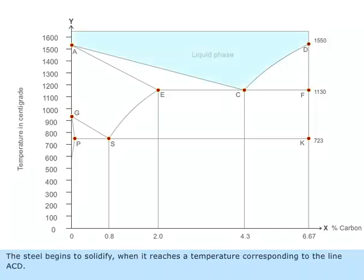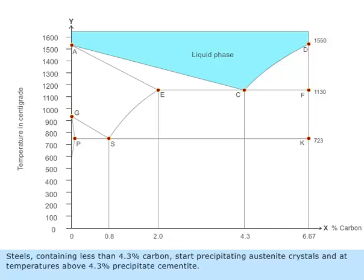The steel begins to solidify when it reaches a temperature corresponding to the line ACD. Steels containing less than 4.3 percentage carbon start precipitating austenite crystals, and at temperatures above 4.3 percentage precipitate cementite.